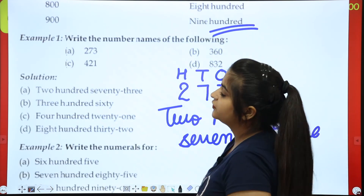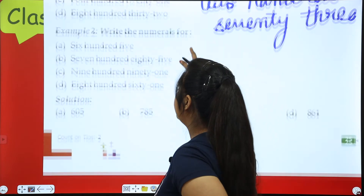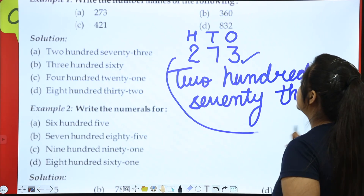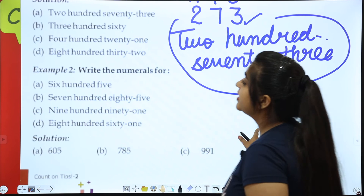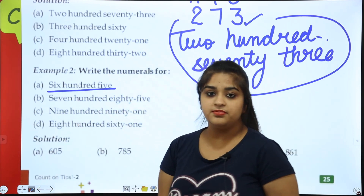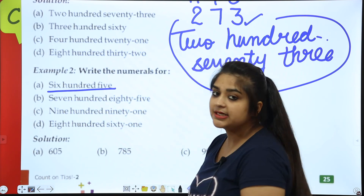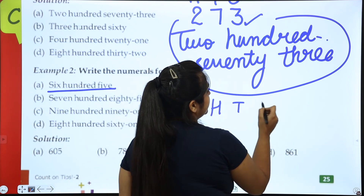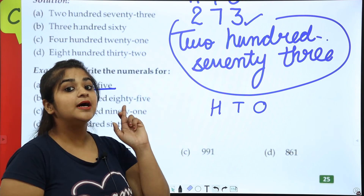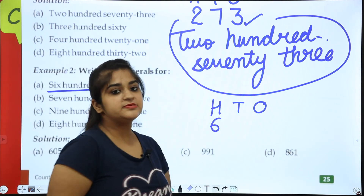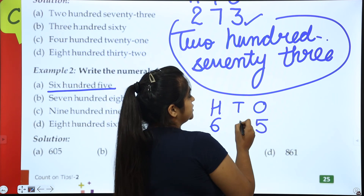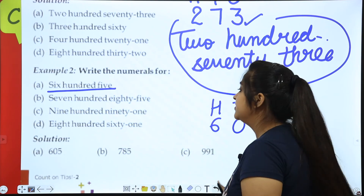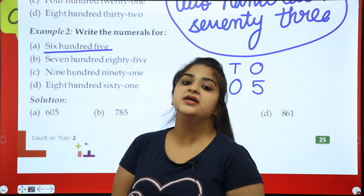So you have to complete those four parts. The second question asks you to write numerals from number names. For example: six hundred five. Six is in the hundreds place, and five is in the ones place. The middle place — the tens place — is empty, so fill it with zero. It becomes 6, 0, 5 — six hundred and five. Don't leave the middle place empty; fill it with zero.